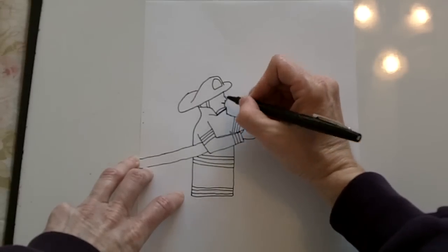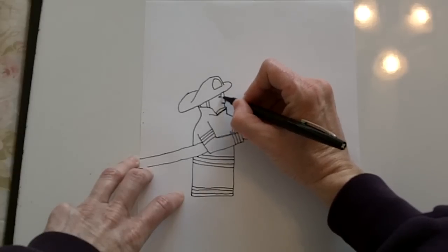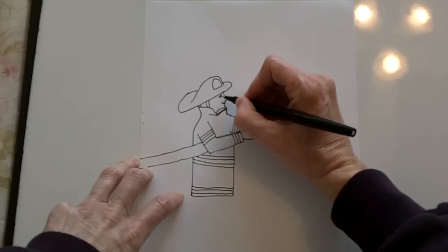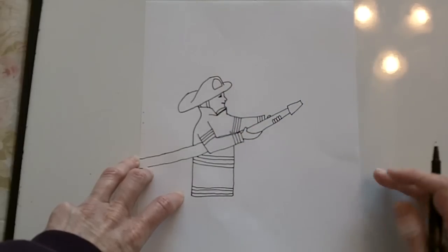And for his eye, you can draw a sideways V, and then a little rounded eye.